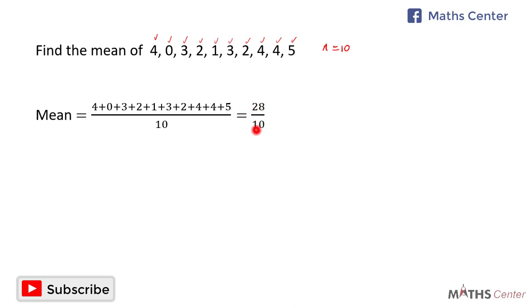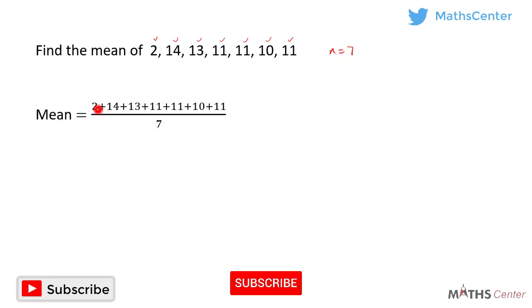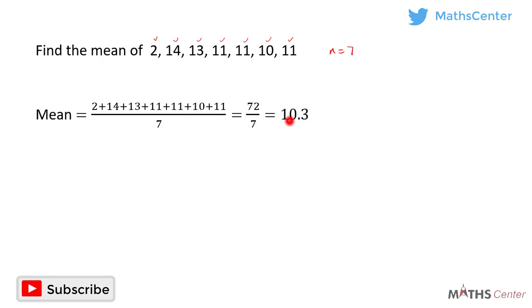This gives us 28 divided by 10, which is 2.8. So the mean of this set of numbers is 2.8. Let's consider another example. Find the mean of 2, 14, 13, 11, 11, 10, 11. Let's count the number of terms — we have 7. So n is equal to 7. To get the mean we add all the numbers and divide by 7: 2 plus 14 plus 13 plus 11 plus 11 plus 10 plus 11, divided by 7.